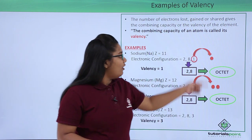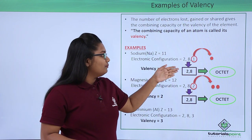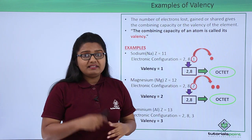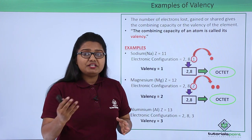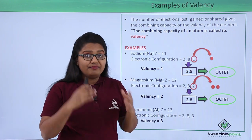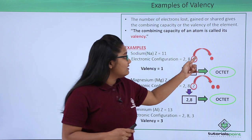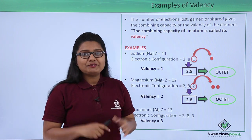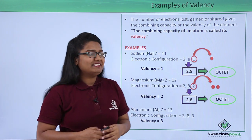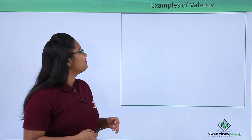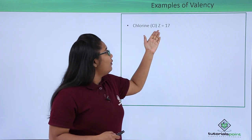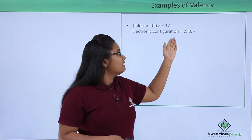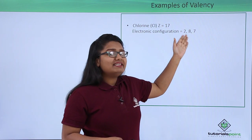In all these cases the atoms had to lose electrons. But there are also atoms which tend to gain electrons — when the number of valence electrons is close to 8. Let's have some such examples. In chlorine, whose atomic number is 17, the electronic configuration is 2, 8, 7.